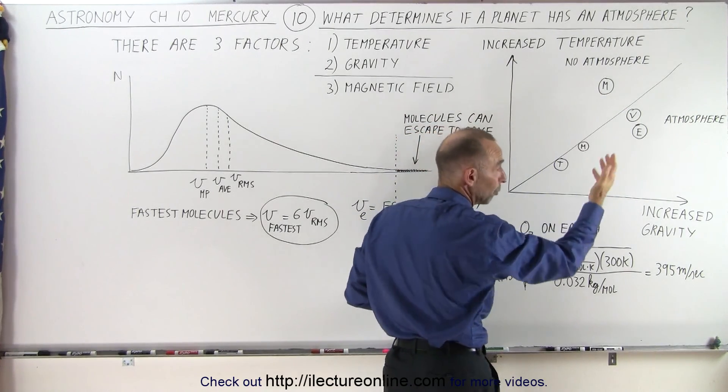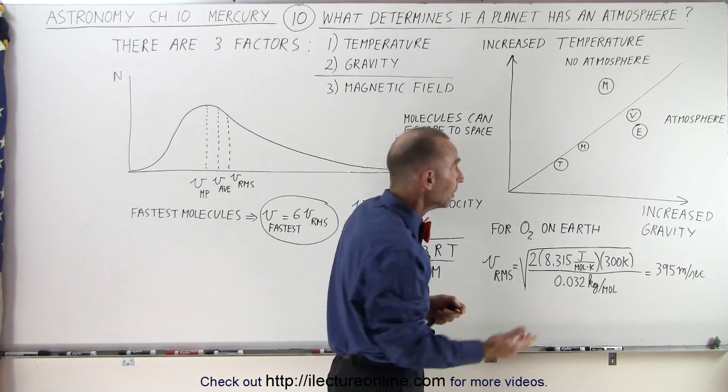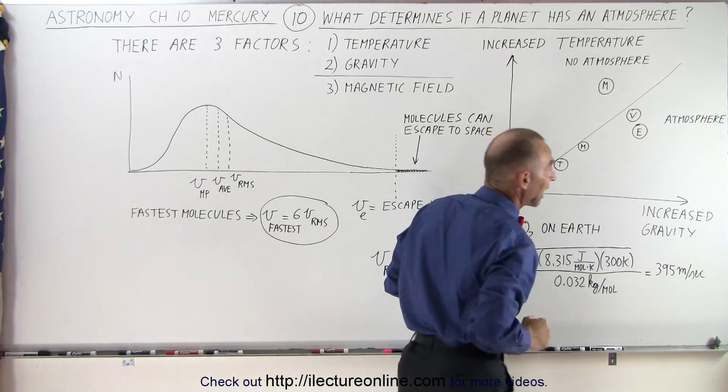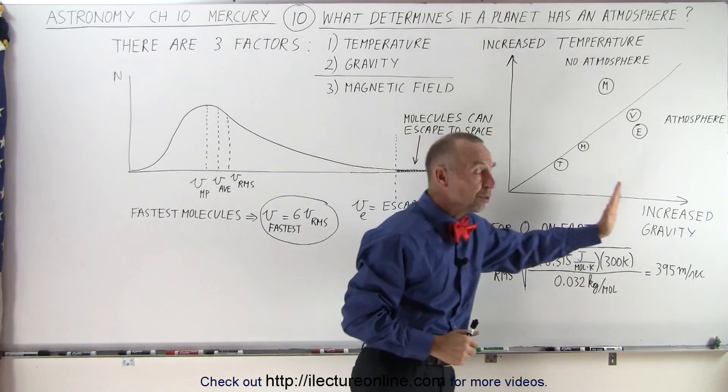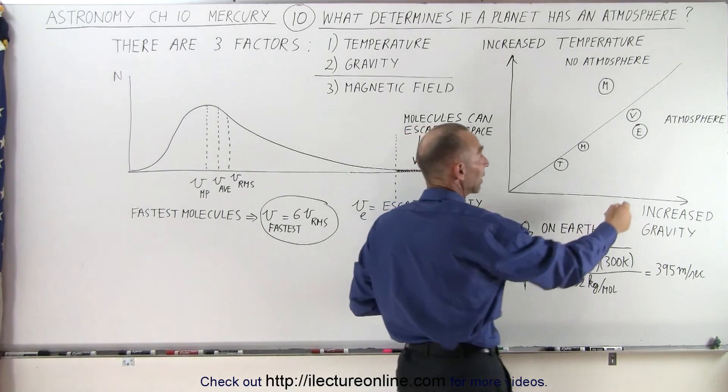And any planet, or a moon or asteroid for that matter, that falls on this side of the line will have an atmosphere. Again, to the right means increased gravity, and to compare the four inner planets,